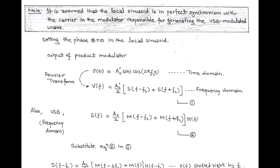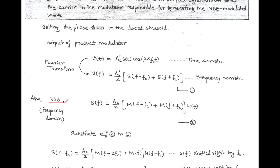Also, we know that the vestigial sideband equation in frequency domain is S(F) equals to AC upon 2, within bracket [M(F - Fc) + M(F + Fc)] into H(F). Here H(F) represents the transfer function of the specially designed sideband shaping filter. Now, we substitute equation 2 in equation 1.